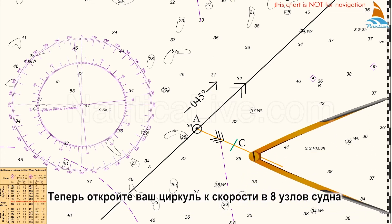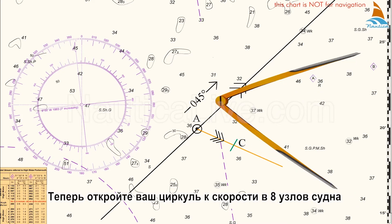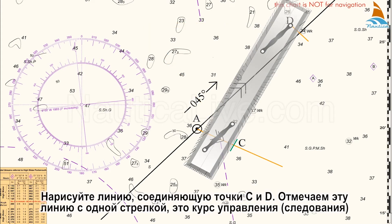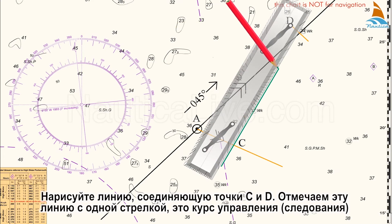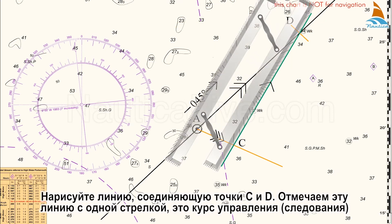Now open your dividers to the boat speed of 8 knots. Place one leg of the dividers on point C and mark the point where the other leg crosses the track at D. Draw a line connecting point C to D. We mark this line with one arrowhead as this is the course to steer.